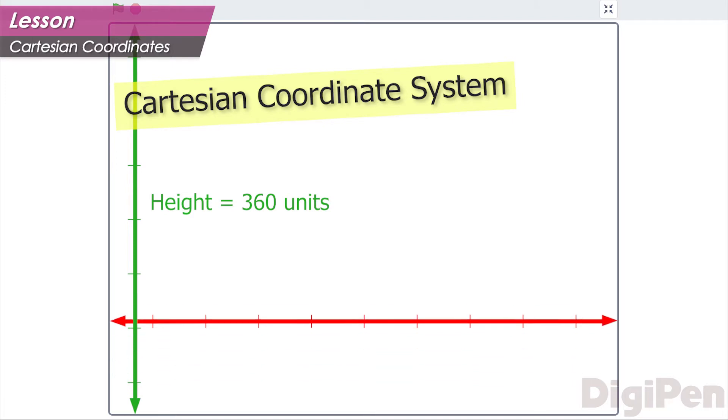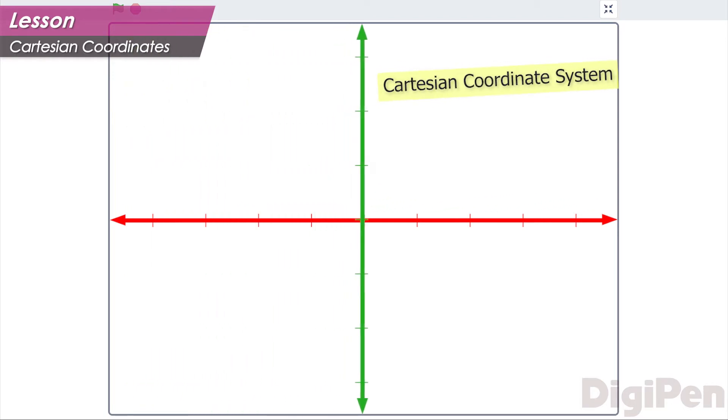This two-dimensional space requires a one-dimensional horizontal axis and a one-dimensional vertical axis. We represent these axes with straight lines.